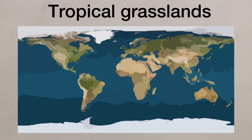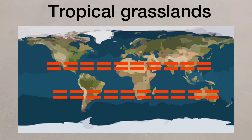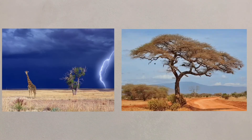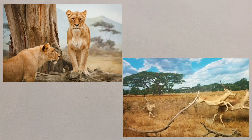Tropical grasslands lie between 15 and 30 degrees from the equator and the climate in these lower latitudes consists of wet and dry seasons. Large herds of animals will graze on these grasslands attracting predators such as lions.